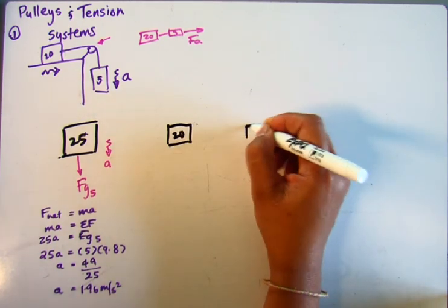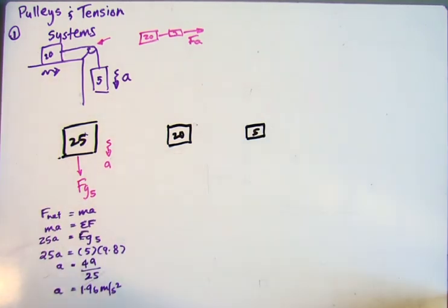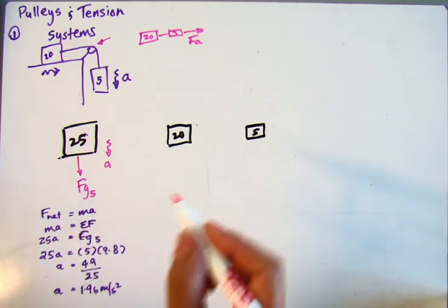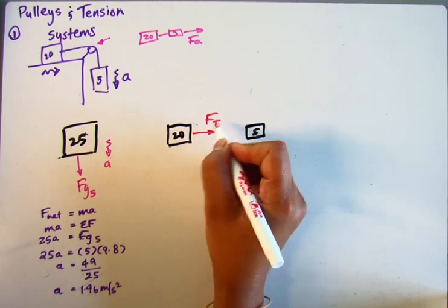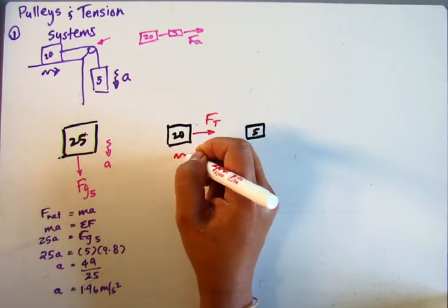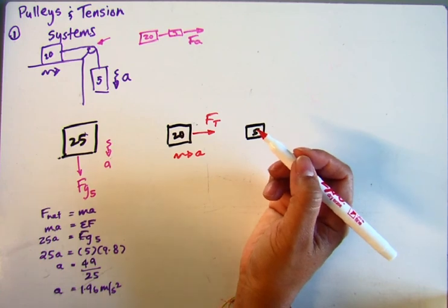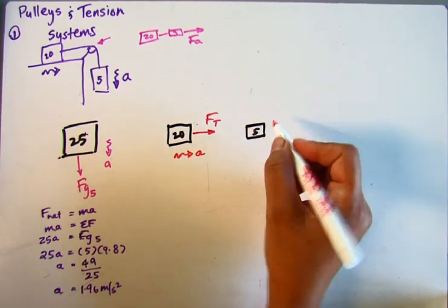So there's a 20 and there's a 5. So what are the forces acting on these? Well, the 20 only has this tension force, FT. That's the thing that's causing it to accelerate. So the reason it accelerates is because it's attached to this 5 kilogram mass, and the tension is pulling it.